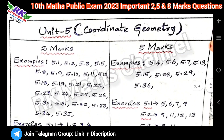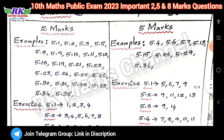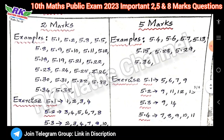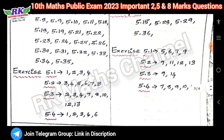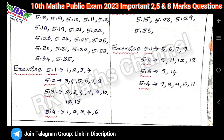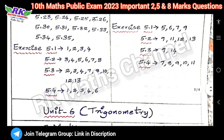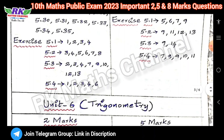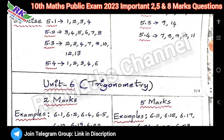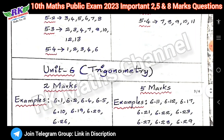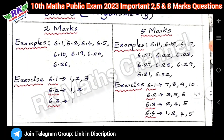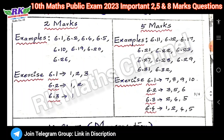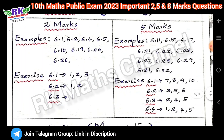Fifth unit: Coordinate Geometry — two marks and five marks questions. Next, sixth unit: Trigonometry — two marks and five marks, exercises.